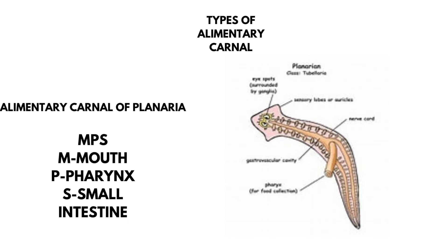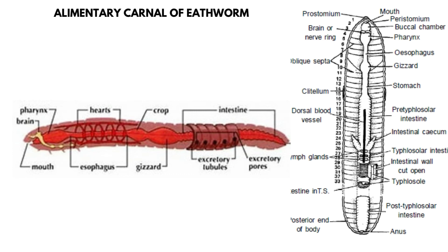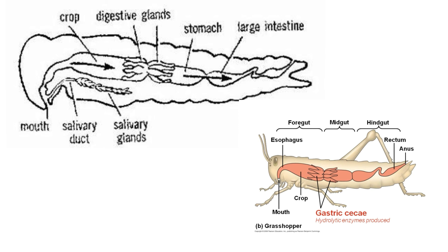Different organisms have evolved different alimentary canals. For example, in planaria (flatworms), the alimentary canal is made up of MPS: M for mouth, P for pharynx, and S for small intestine. The earthworm's alimentary canal is more complex, including the mouth, esophagus, crop, gizzard, and intestine. There is a similarity between the earthworm's canal and that of the grasshopper — both have a crop.